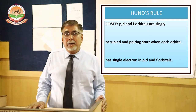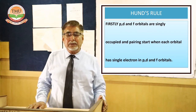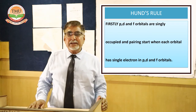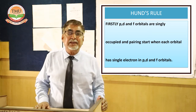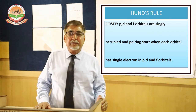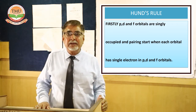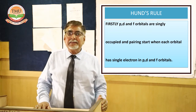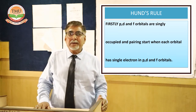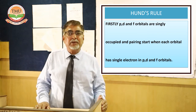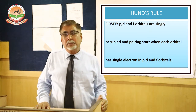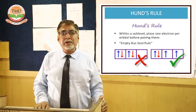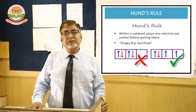If we arrange the orbitals vertically and connect them diagonally, this gives the increasing order of energy levels. We find that the energy of 3d is higher than 4s, so 4s is filled first and 3d is filled later. According to the Aufbau Principle, we can write the electronic configuration of every element.